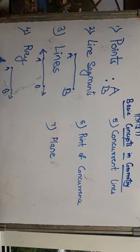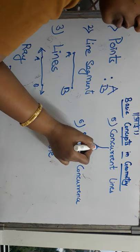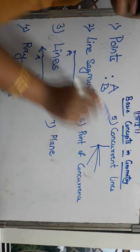The next is concurrent lines. What is concurrent lines? When two or more lines pass through a single point, it is called concurrent lines.